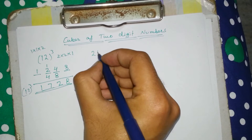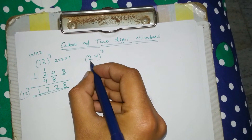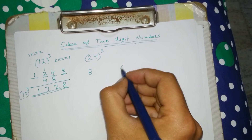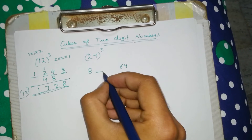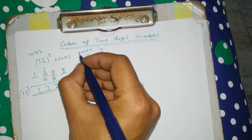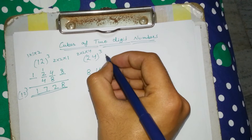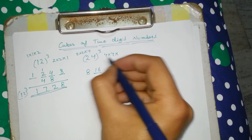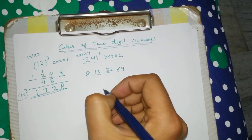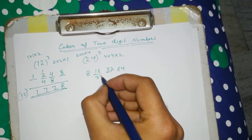Now we will do the cube of 24. 24 has two digits, 2 and 4. The first digit is the cube of 2, which is 8. The last digit is the cube of 4, which is 64. The second digit is the square of the first digit — 2 into 2 — multiplied by the second digit 4, giving 16. The third digit is the square of the second digit — 4 into 4 is 16 — multiplied by the first digit 2, giving 32. Now double both middle digits: 32 and 64.